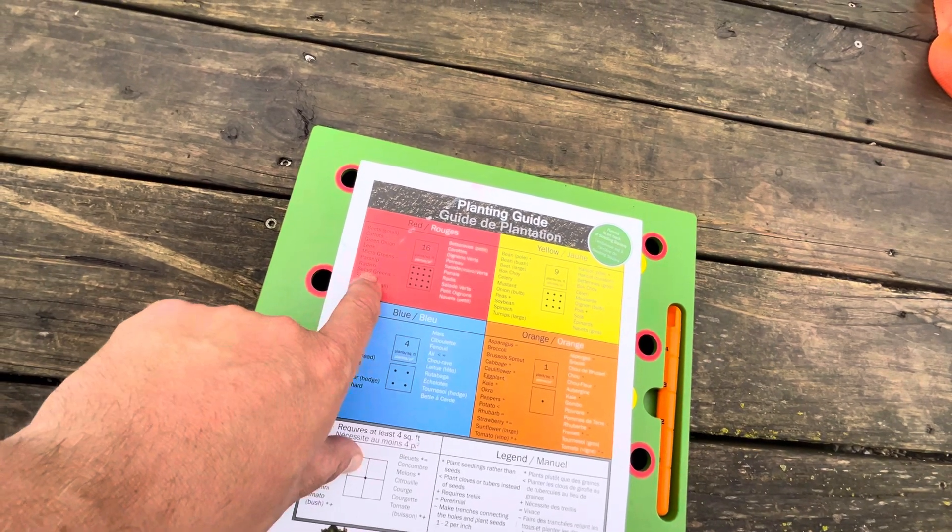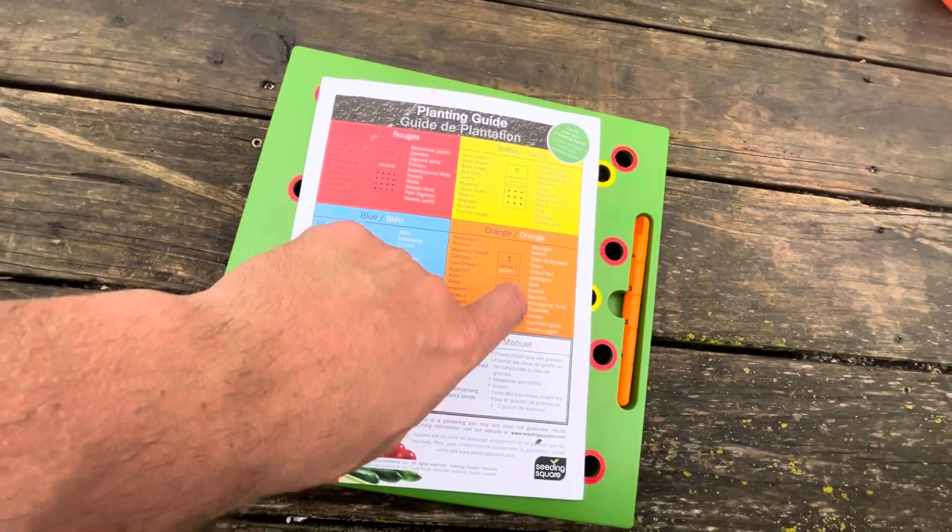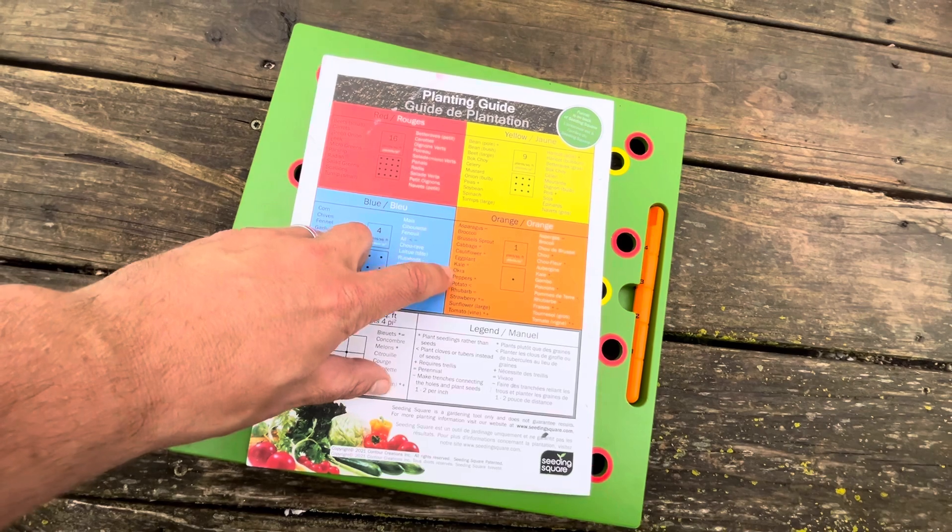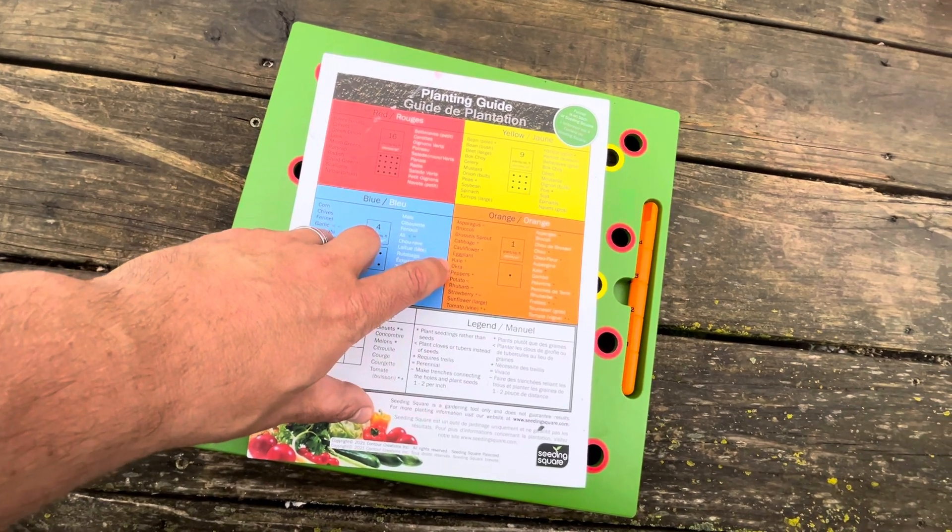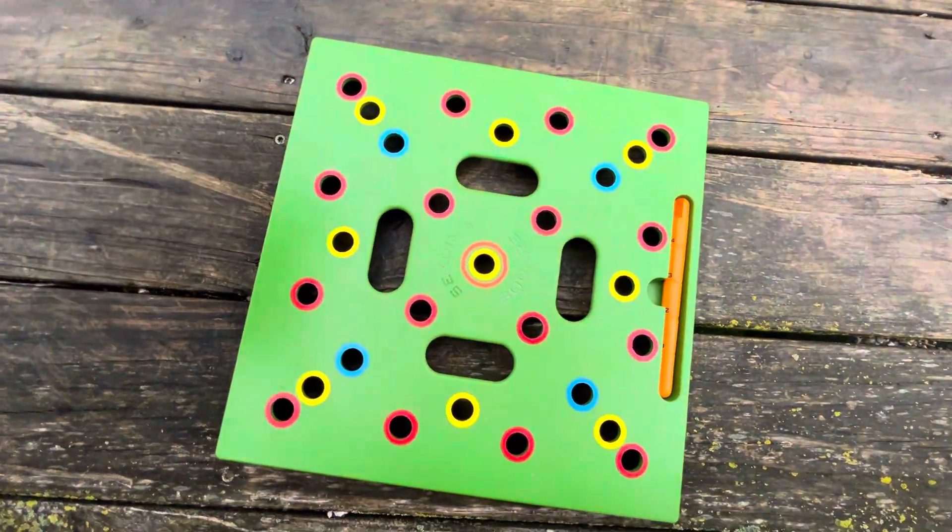Micro greens, parsnips, salad greens, etc. can fit at that density. But asparagus, broccoli, eggplant, and kale, you can only put one per square foot.